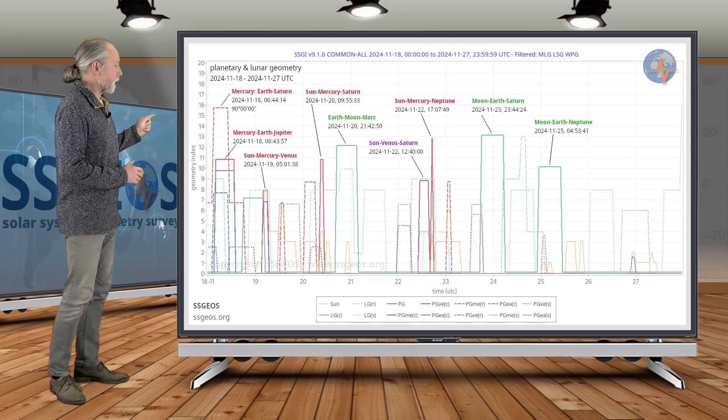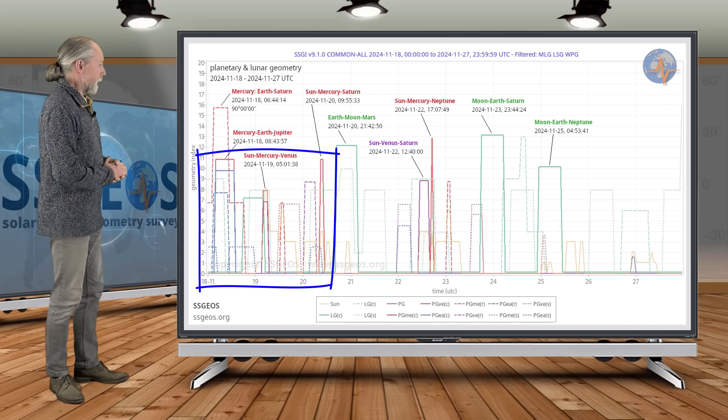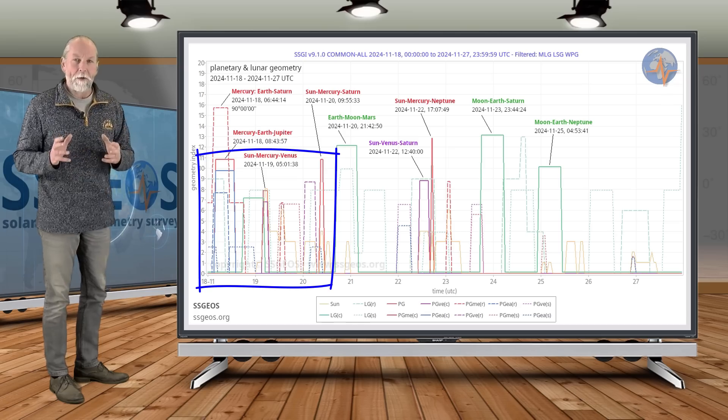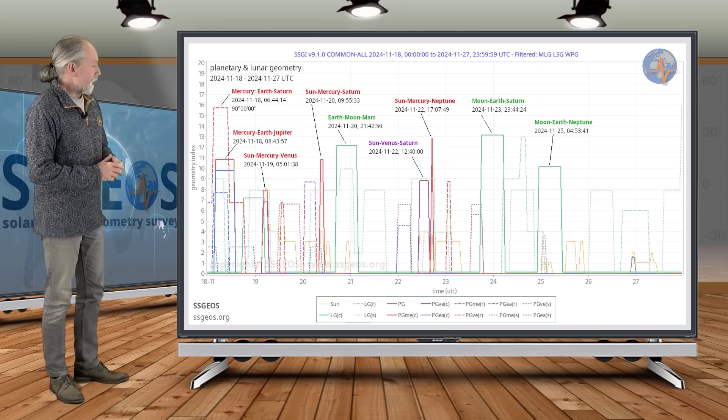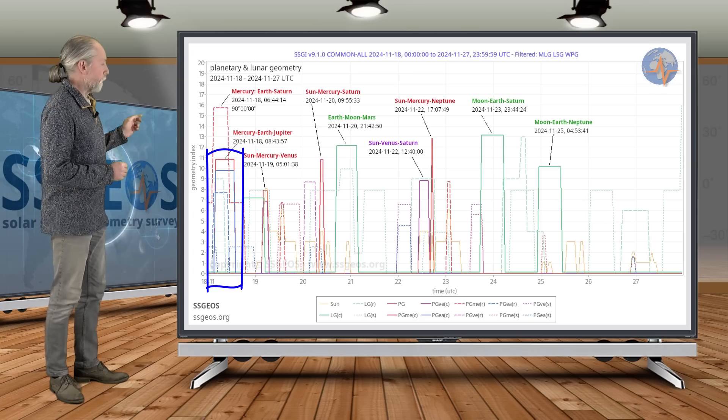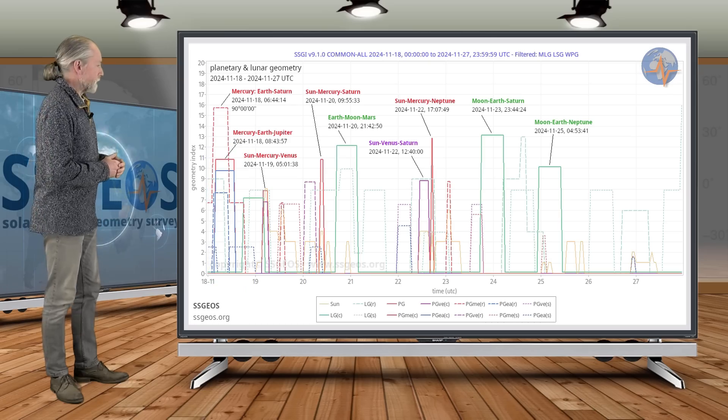We see right at the beginning critical planetary geometry, and we actually have five planetary conjunctions coming up from the 18th to the 22nd. The first was yesterday morning with Earth between Mercury and Jupiter.